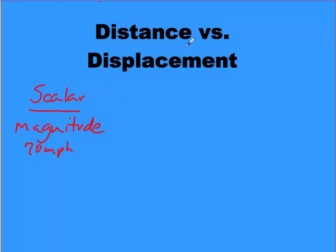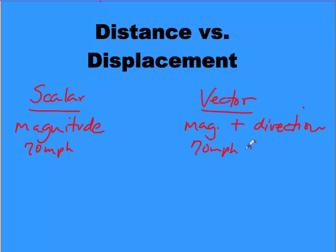The other type of quantity that we have is called vector. Now, vector is magnitude, so we have that plus direction. So now we have to give it a direction. So if we say a car is traveling at 70 miles per hour, and let's say it's going south, that would be a vector quantity because this is the magnitude and this is the direction. So we will be using both of these. Right now we're going to be using scalar at this point, but then we will also have vector.